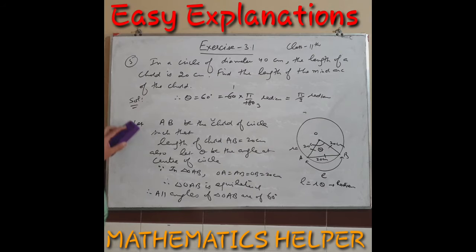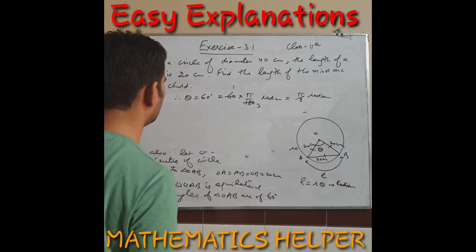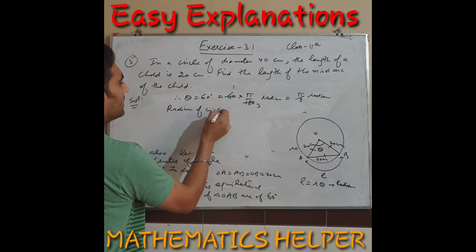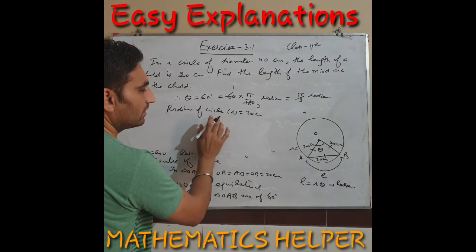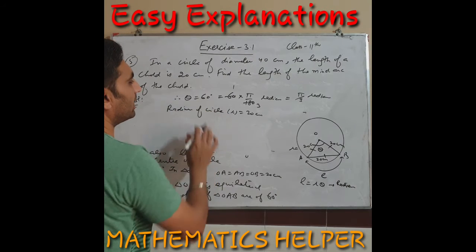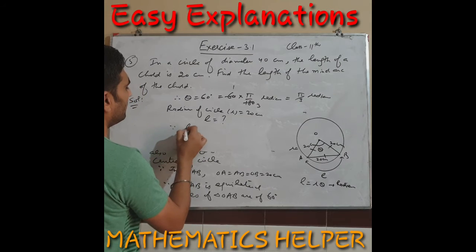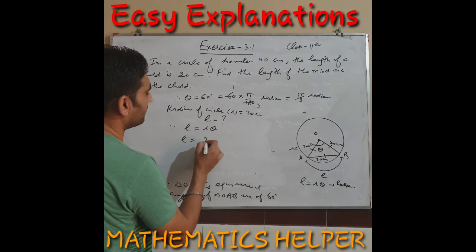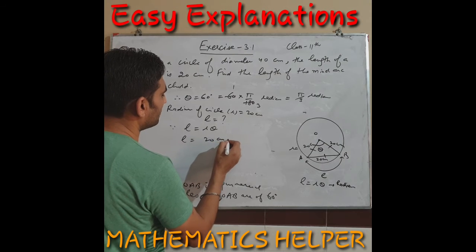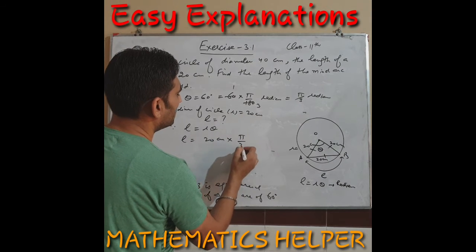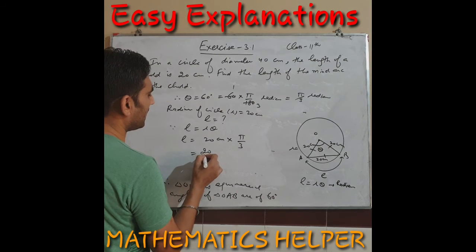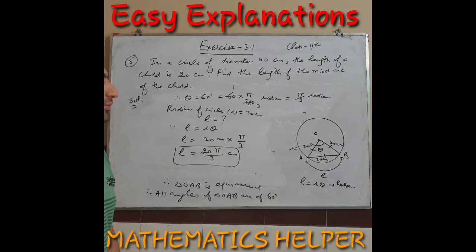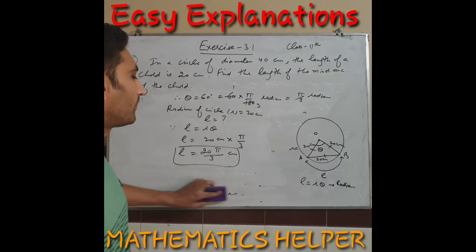Now we have θ = π/3 radians and radius r = 20 cm. Using l = rθ: l = 20 × π/3 = 20π/3 centimeters. This is the length of the minor arc for question five. Remember to always convert angles to radians before using the formula l = rθ.